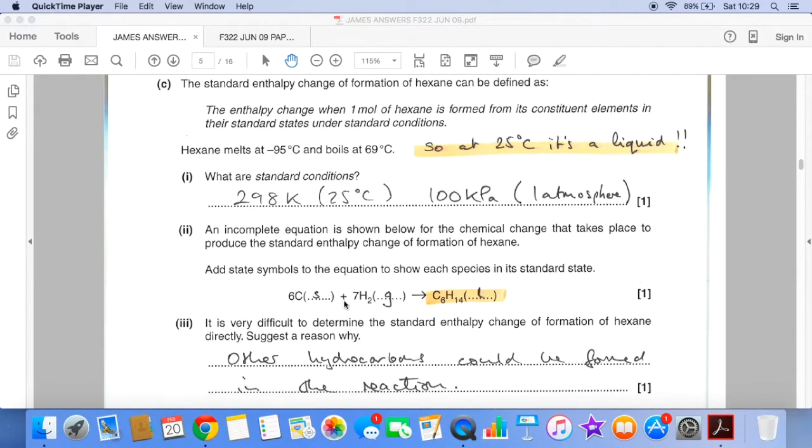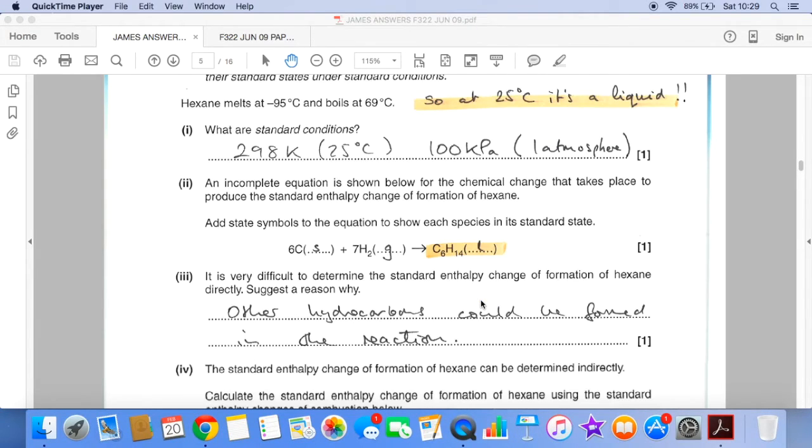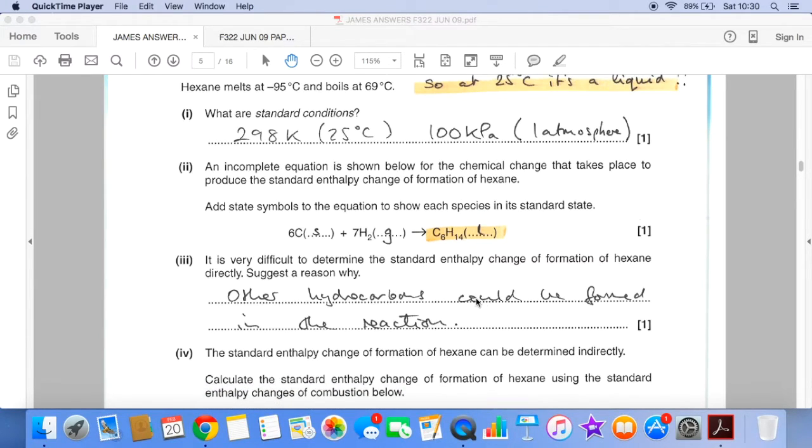So carbon's a solid, hydrogen's a gas, hexane's a liquid. Why is it very difficult to determine the standard enthalpy change of formation of hexane directly? Well, if you took six carbons and seven moles of hydrogen, you could form more than just straightforward hexane. You could get a branched isomer. So lots of possible products could form.